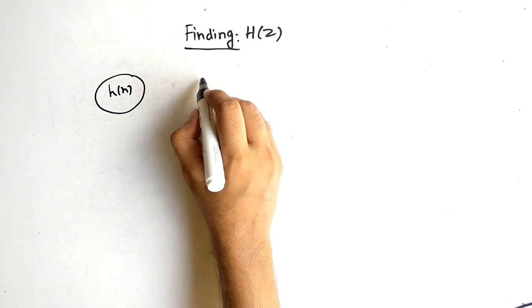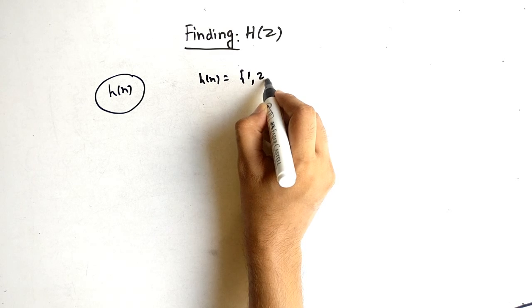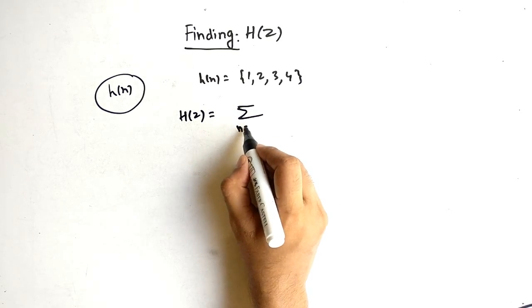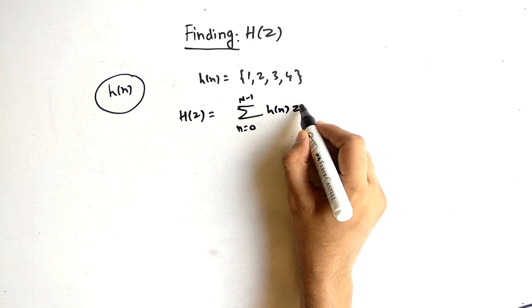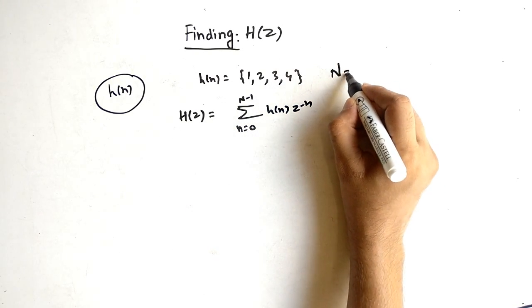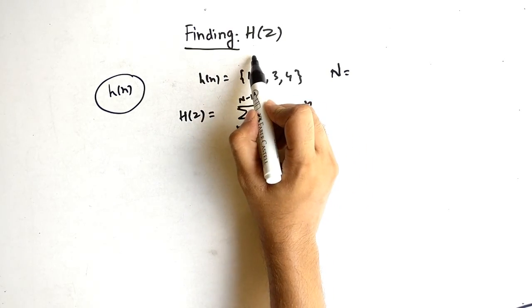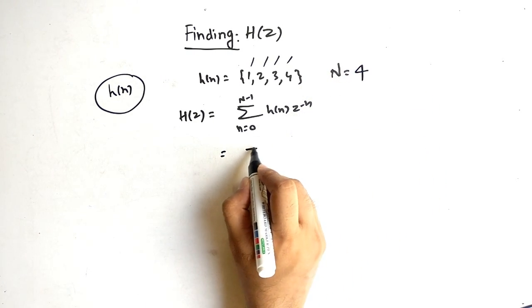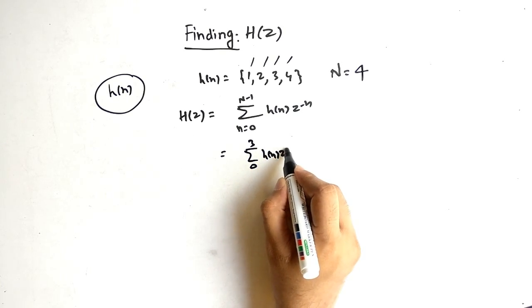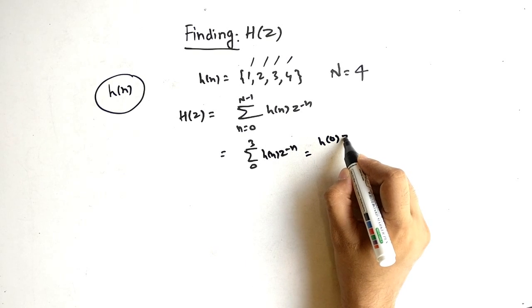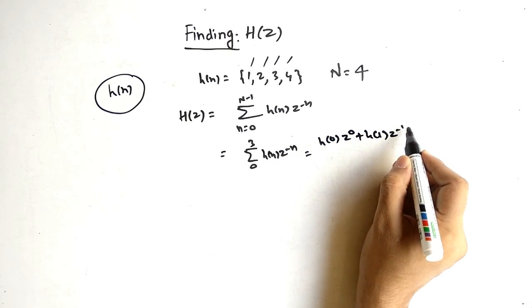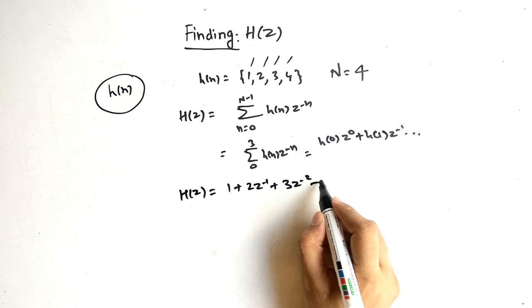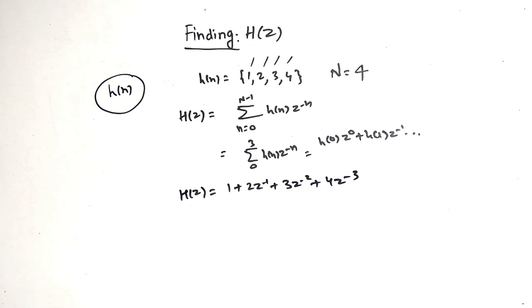The first type is finding H(z) from H(n). Suppose H(n) = {1, 2, 3, 4}. The formula says summation from n=0 to N-1 of H(n) z^(-n). Capital N is the length, so here it is 4, going from zero to three. This splits as H(0)z^0 + H(1)z^(-1) + ..., giving the final answer H(z) = 1 + 2z^(-1) + 3z^(-2) + 4z^(-3).